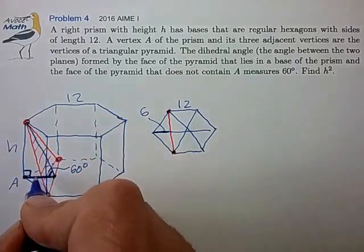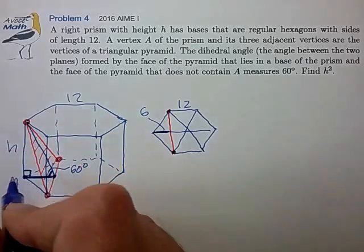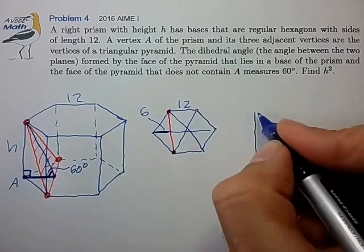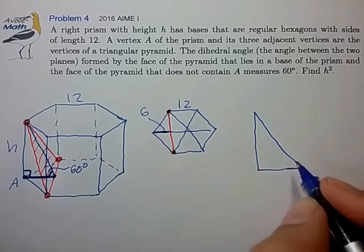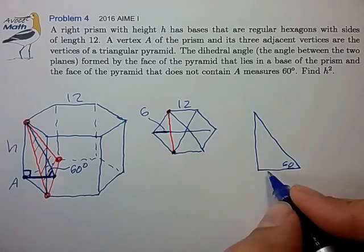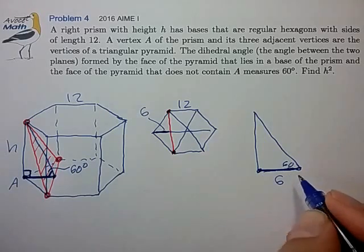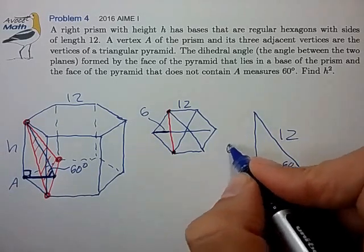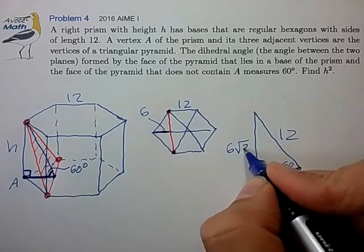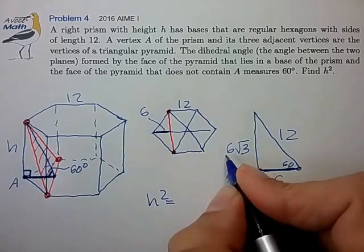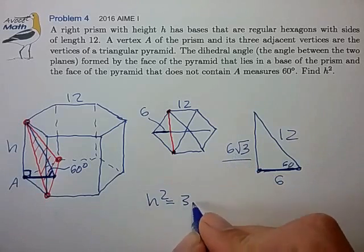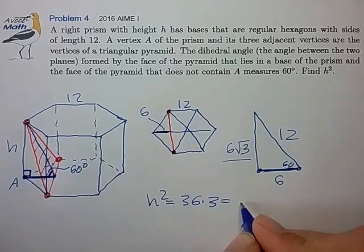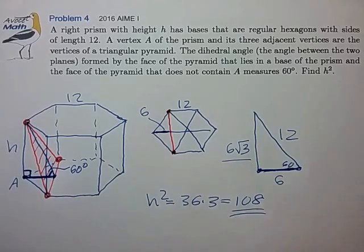So we can basically break out this right triangle and show that it's a 60 degree right triangle with a base of 6, hypotenuse of 12. The height then is 6 radical 3. And so h squared is just the square of this, 36 times 3, 108. That's our final answer.